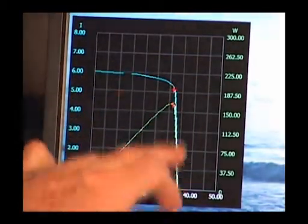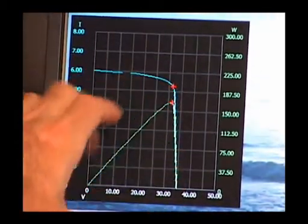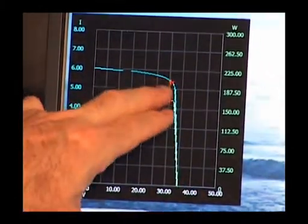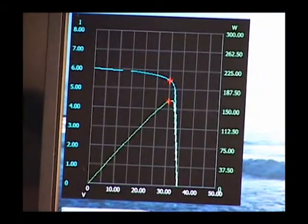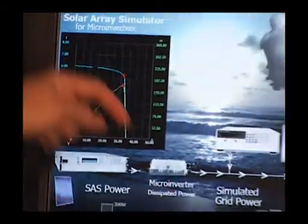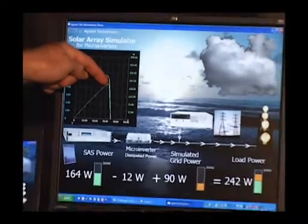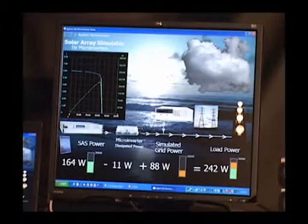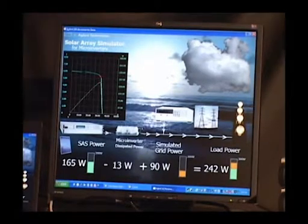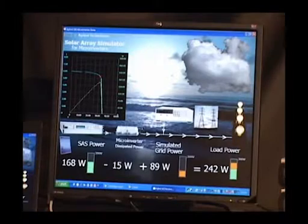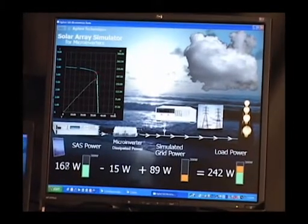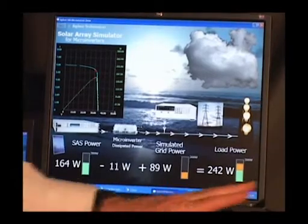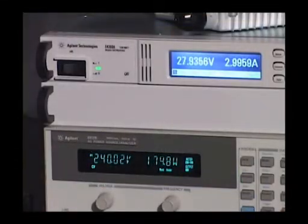At this particular point in the IV curve, the red crosshairs are showing the present operating point on the SAS. You can see that it's operating right at the knee of the power curve and that's the maximum power point. That's actually the job of these microinverters. The job of the microinverter is to harvest as much power as possible from a real solar panel that would be mounted on your roof. In this case it's harvesting that power from our solar array simulator.